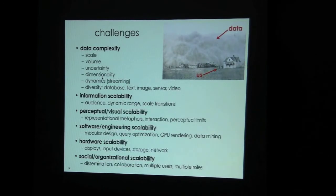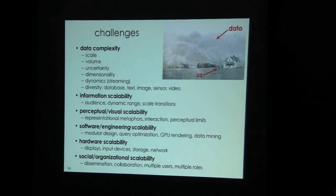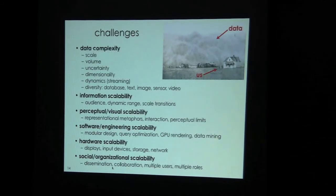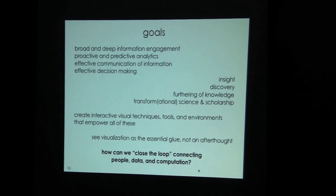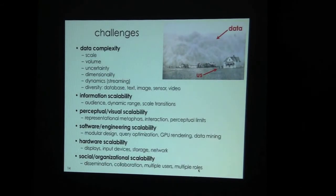What do we mean by a dimension? If you think of a column in an Excel spreadsheet — for instance, the first name of a person, the second name, the source city of the letter, the destination city, the date on which it was written. It's a characteristic of a data record. There are other aspects of scalability as well, mostly technical, but we concern ourselves with matters of social or organizational scalability. How do you disseminate visual or analytic results? How do you encourage collaboration between people within these tools? What happens if you have multiple different users playing multiple different roles?